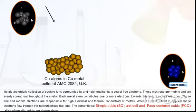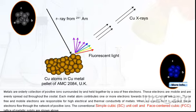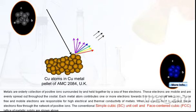Metallic solids. Metals are orderly collection of positive ions surrounded by and held together by a sea of free electrons. These electrons are mobile and are evenly spread out throughout the crystal. Each metal atom contributes one or more electrons towards this sea of mobile electrons.